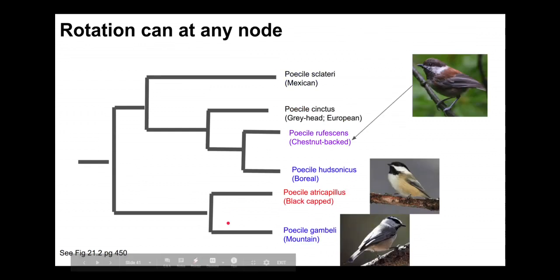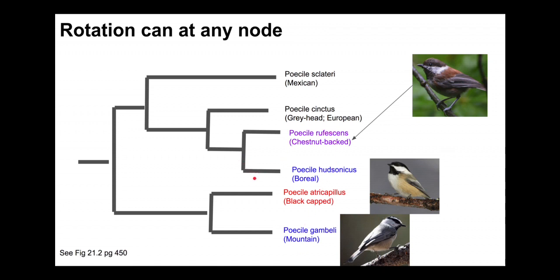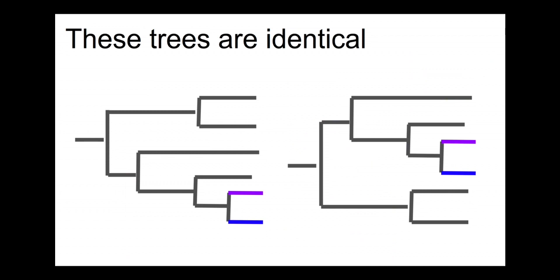Rotation can occur around any node. Here I've flopped the entire tree, putting black-capped and mountain chickadee at the bottom and boreal chickadee up top, rotating around this node. I haven't changed the meaning of the tree at all — all of the relationships and branching patterns are identical. Take a look at these trees carefully; you may want to pause the video. The overall pattern of branching is identical, even though the order that the branch tips appear from top to bottom differs.